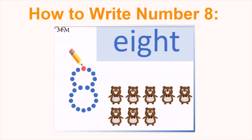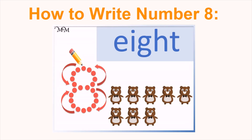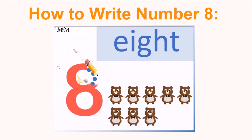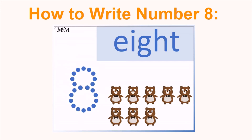We will start 8 with a curved line like this. Then we will continue with another curved line going in the downward direction, and then another line moving towards upside, and then again a curve like this. 8. Let's repeat once more. Curved line below, side, up and done. 8 is written.